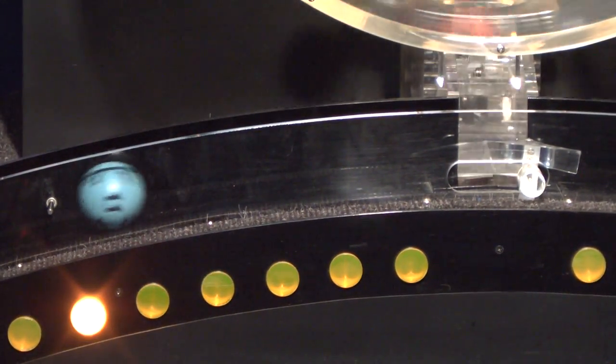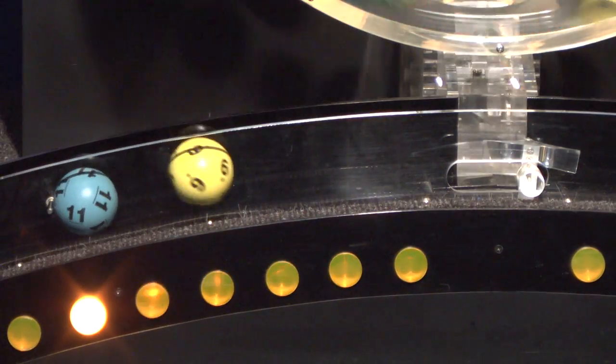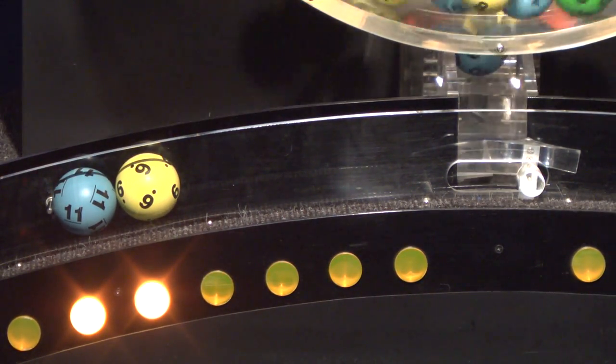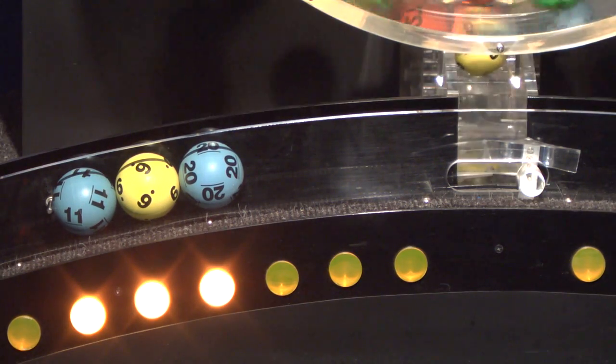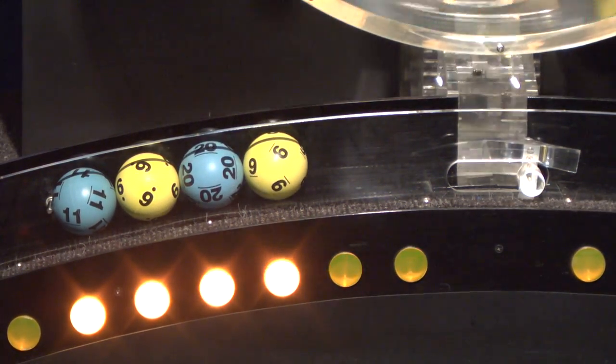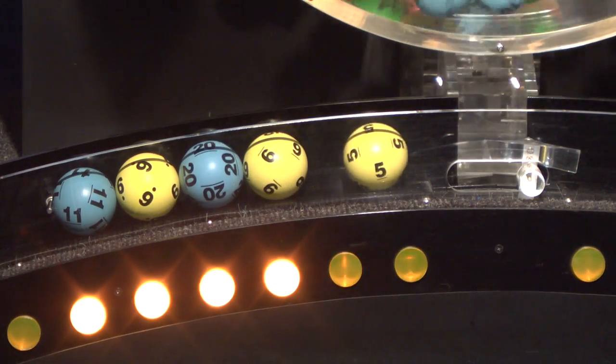Our first number up is number 11. After that we have number 6. And here comes number 20. If you've matched these three numbers, you've already won a prize. After that is 9. And the final ball in this sequence is number 5.